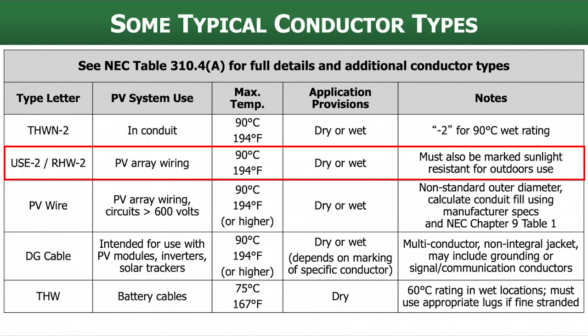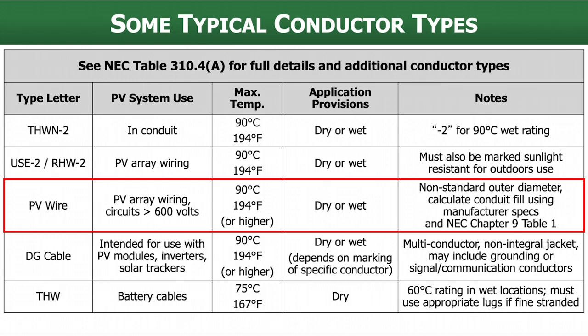Probably more common these days is PV wire itself. We use this for lots of array wiring, especially for circuits over 600 volts. PV wire is available up to 2000 volt rated, and it has a 90°C dry or wet rating. In some cases it has even higher temperature ratings beyond 90°C. It's available in a wide range of sizes, and sometimes it's used in conduit for PV output circuits from a combiner box. If you have a 1500-volt system, this is going to be the wire you can find with that voltage rating.